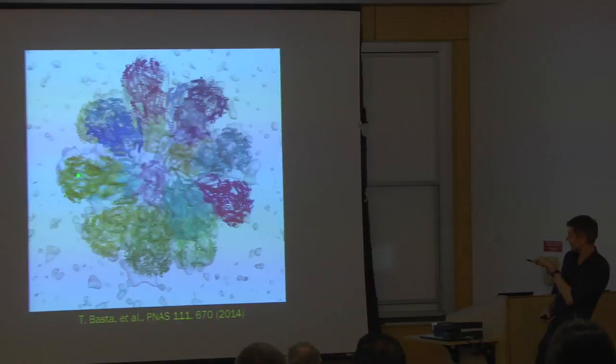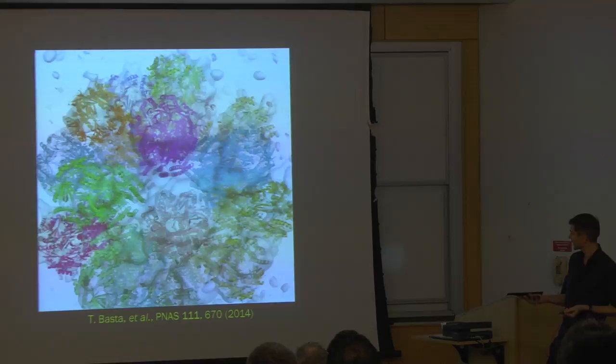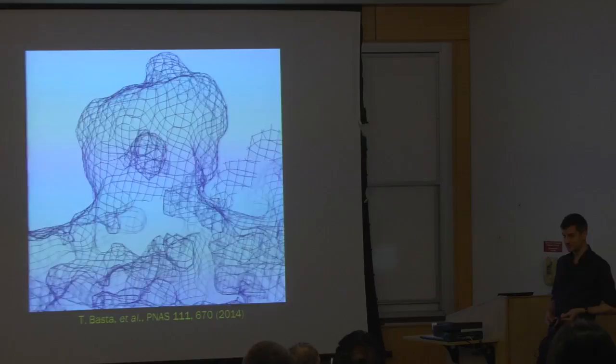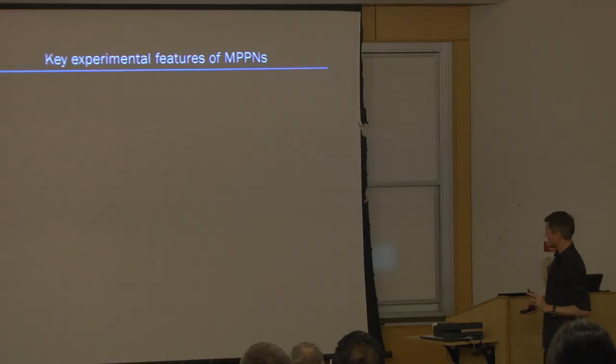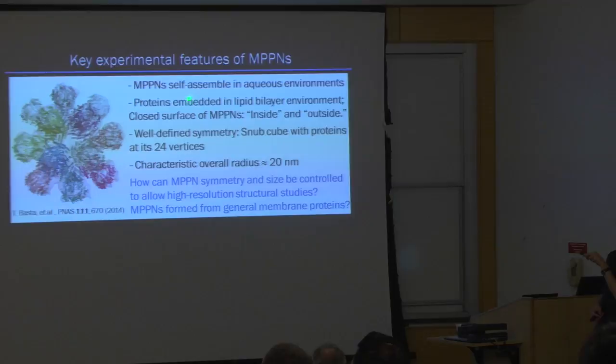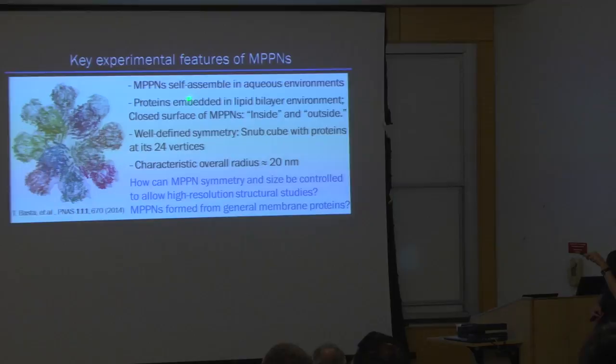That's a SNAP cube, with the idea being that on each vertex of the SNAP cube there sits one of these particular proteins called MscS. That's a 3D reconstruction of the electron cryo-tomography images — you're looking at the surface of the MPPN. Superimposed is the structure of the membrane protein MscS from protein crystallography. You can see that the approximate surface of the membrane protein is resolved, along with smaller-scale features such as cavities inside the protein, though this is not atomic-scale resolution.